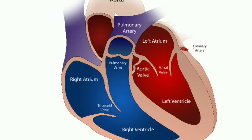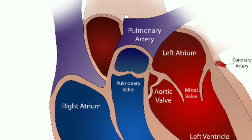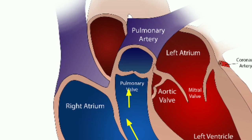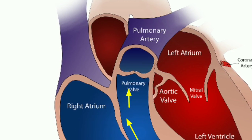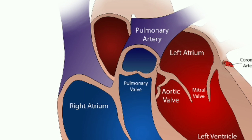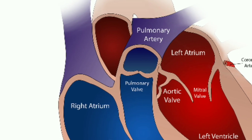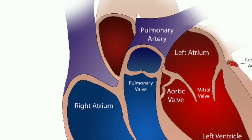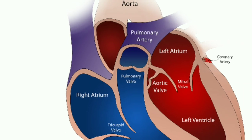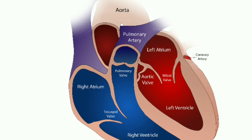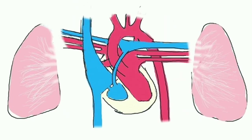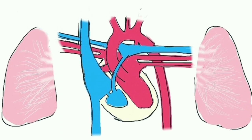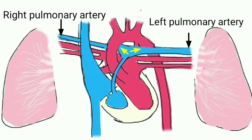Pulmonary arteries: the pulmonary arteries carry deoxygenated blood from the right ventricle into the alveolar capillaries of the lungs to unload carbon dioxide and take up oxygen. These are the only arteries that carry deoxygenated blood, and are considered arteries because they carry blood away from the heart. The pulmonary artery branches into the left and right pulmonary arteries that deliver deoxygenated blood to their respective lungs.